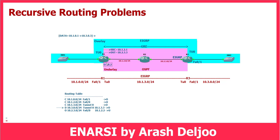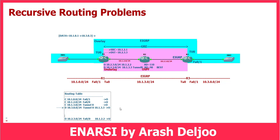We are receiving from OSPF 10.2.3.0/24 with next hop 10.1.2.2. We are also receiving from EIGRP 10.2.3.0/24 with next hop 10.1.3.3 over Tunnel0. The administrative distance of EIGRP is 90 and OSPF is 110, so the EIGRP route is the better path. Because of that, in the routing table of Router1, the OSPF-learned route is replaced by the EIGRP-learned route for 10.2.3.0/24 over Tunnel0 with next hop 10.1.3.3. This is the problem.